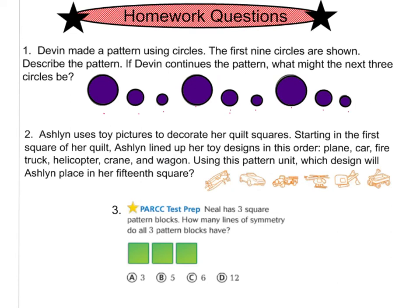Question number two says this. Ashlyn uses toy pictures to decorate her quilt squares. Starting in the first square of her quilt, Ashlyn lined up her toy designs in this order: plane, car, fire truck, helicopter, crane, and wagon. Using this pattern unit, which design will Ashlyn place in her 15th square? Remember, this is going to be square number one, two, three, four, five, six. If she repeats this pattern, what shape would be the 15th square?